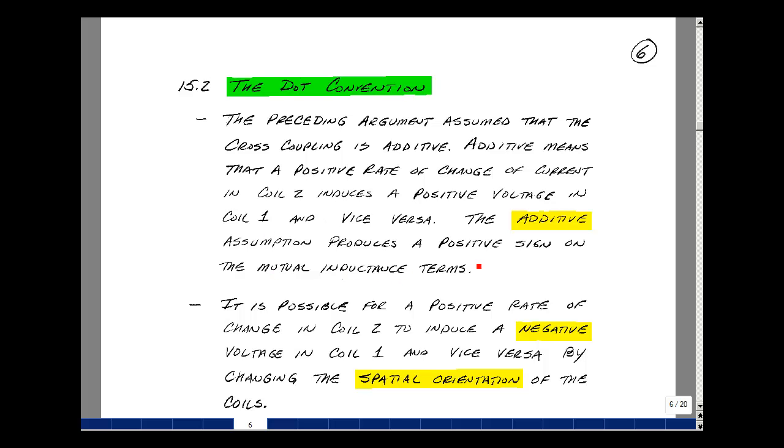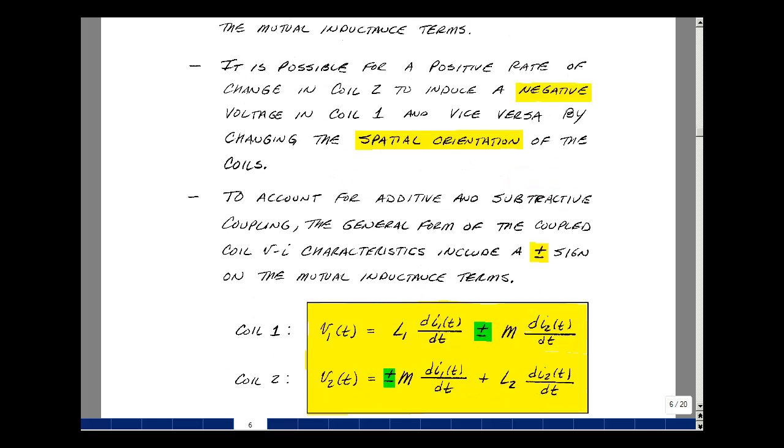The additive assumption produces a positive sign on the mutual inductance terms. It is possible for a positive rate of change in coil 2 to induce a negative voltage in coil 1, and vice versa. We can do this by changing the spatial orientation of the coils.